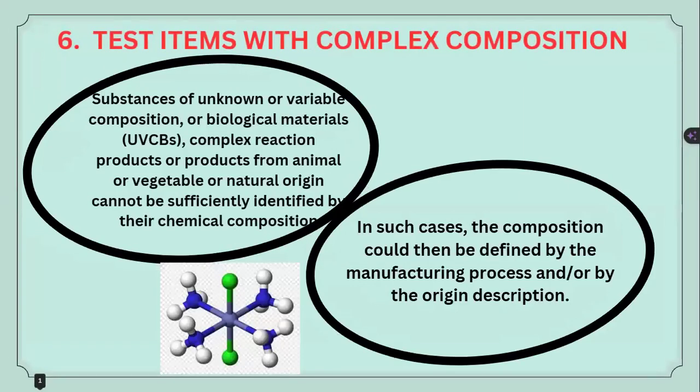Test items with complex composition — such as substances of unknown or variable composition, biological materials, complex reaction products, or products of animal, vegetable, or natural origin — cannot be sufficiently identified by chemical composition alone. In such cases, the composition could be identified by the manufacturing process or by the origin description.